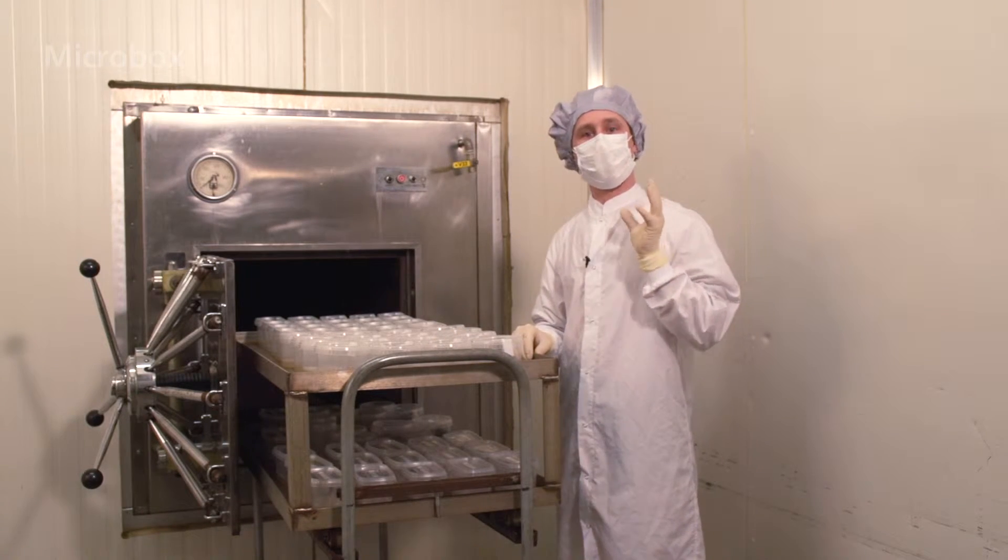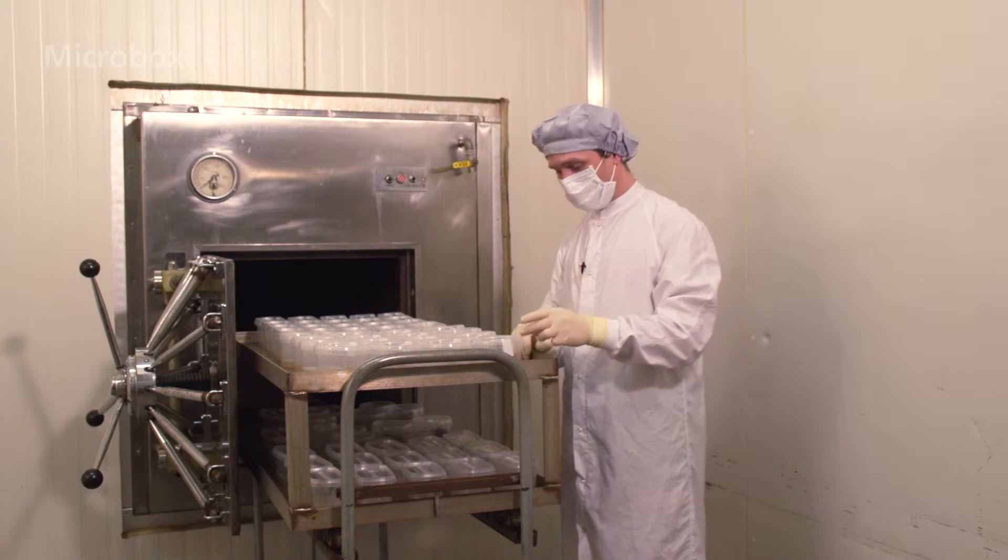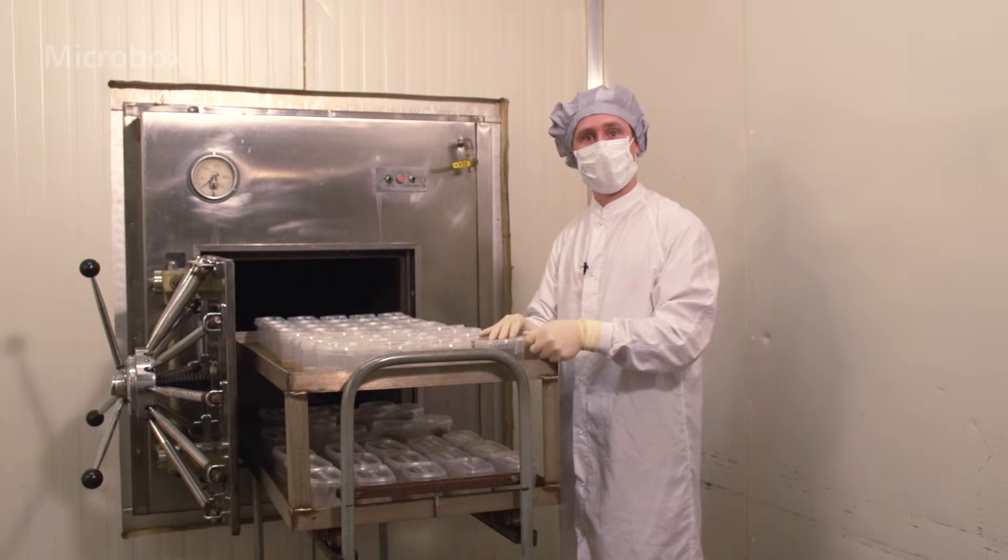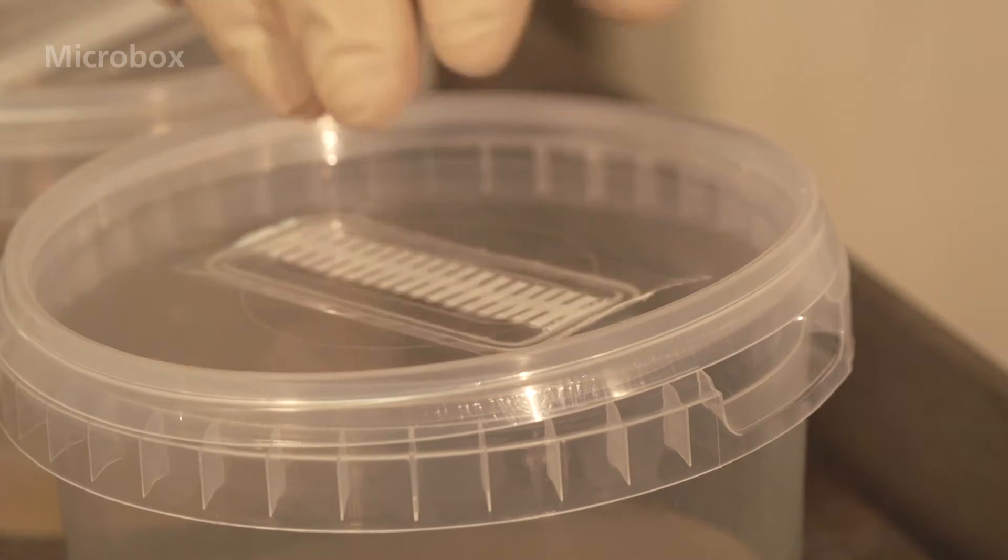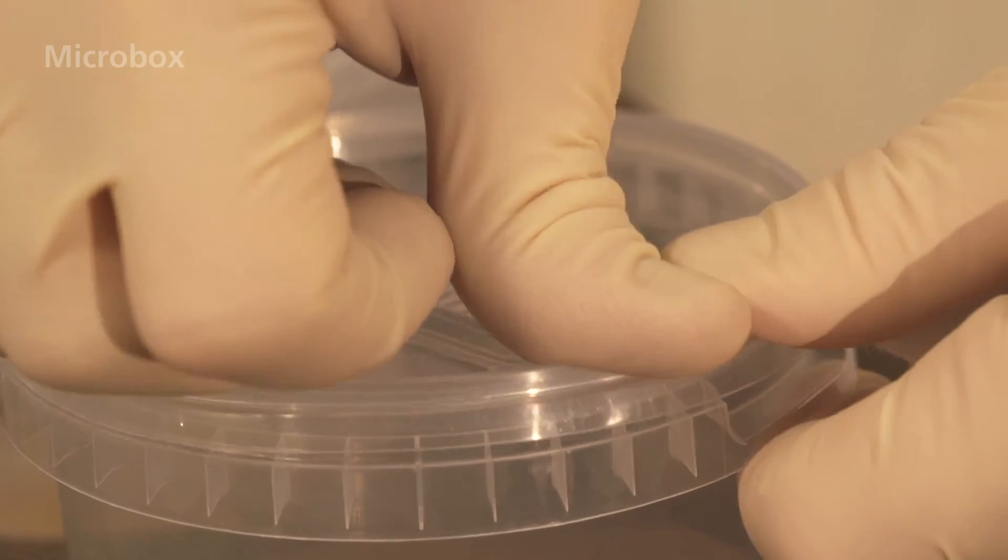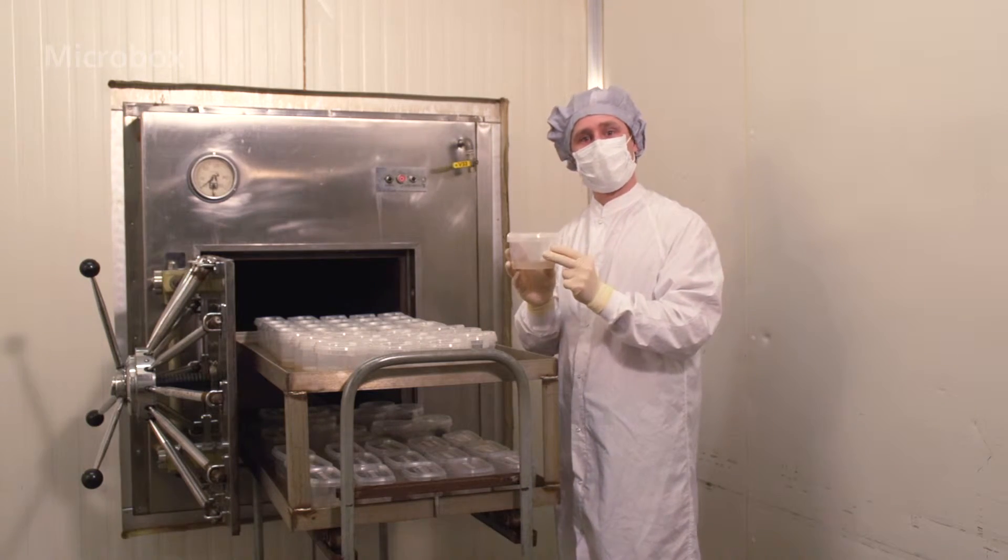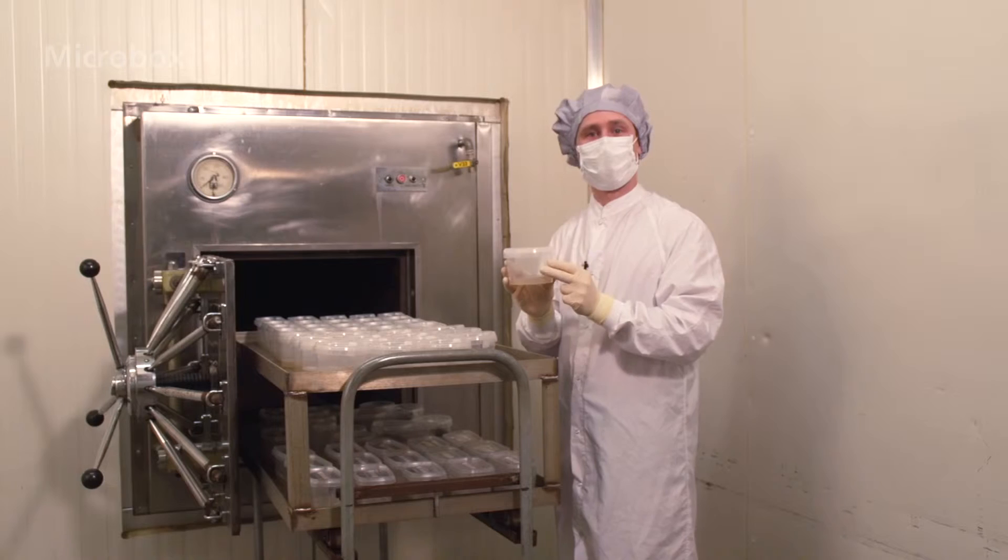When taking the micro boxes from the autoclave, remove the piece of non-woven fabric immediately and close the box firmly. The micro box is now ready to be stored in your cleanroom department.